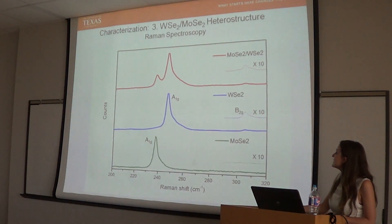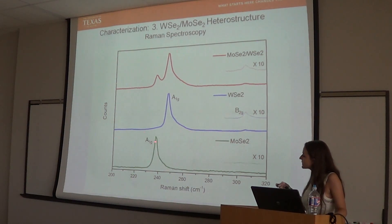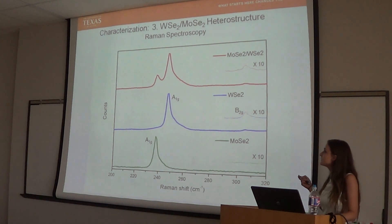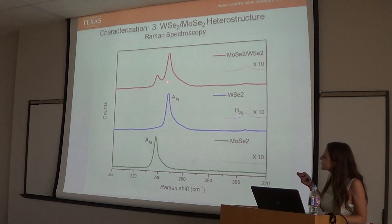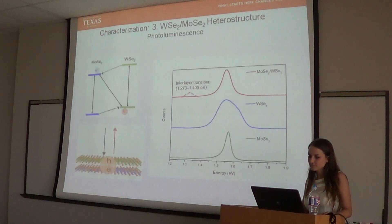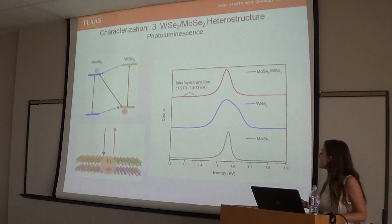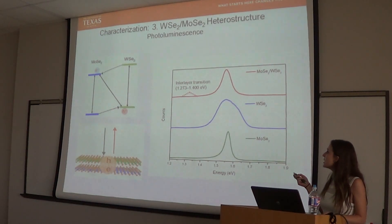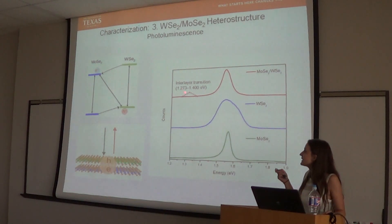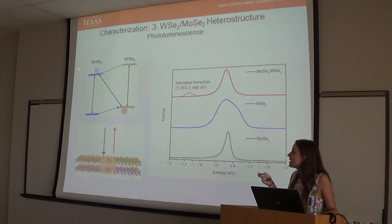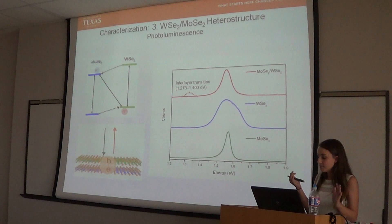Here's our heterostructure under Raman spectroscopy. The MoSe2 flake comes up at a peak around 238, and the WSe2 flake at about 244. The heterostructure actually has two peaks: a small one where the MoSe2 should be, and a bigger one at WSe2 — bigger because it was the bilayer flake. Under the photoluminescence test, we have our MoSe2 peak and our WSe2 peak, but for the MoSe2/WSe2 heterostructure we also have an additional band gap peak. This is because of the exciton created once you form the heterostructure — the electron from the MoSe2 and the hole from the WSe2 create this exciton, giving an extra band gap which we're using for band gap engineering to create those desired properties.